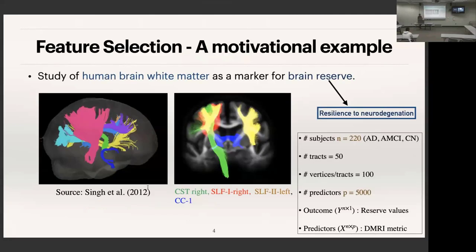Let's begin with the motivational example. We have a study of human brain white matter as a biomarker for brain reserve. Brain reserve is basically an interesting phenotype — it's the resilience to neurodegeneration. In many older patients, even though they show clinical signs of neurodegeneration from their behavior, it's not very evident that they are actually ill. It has been hypothesized that human brain white matter is a potential marker for this kind of resilience.